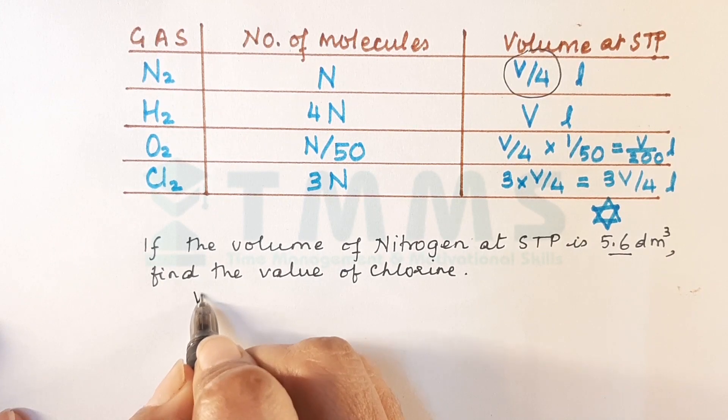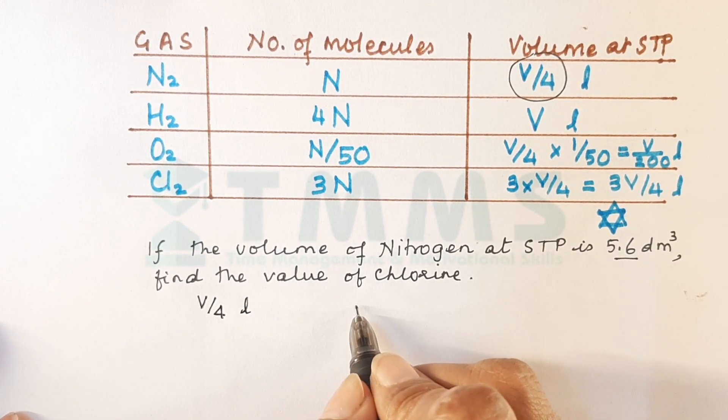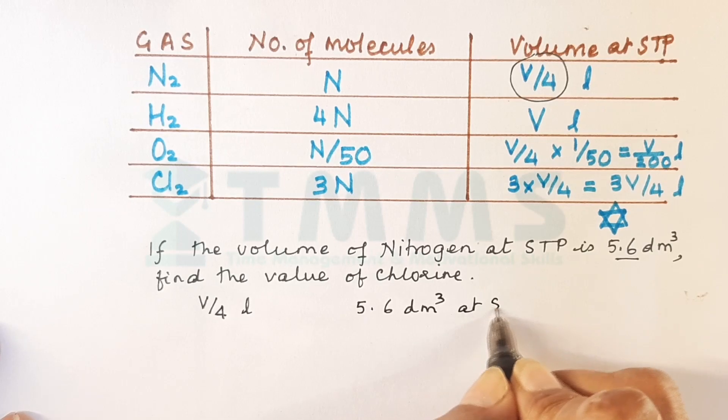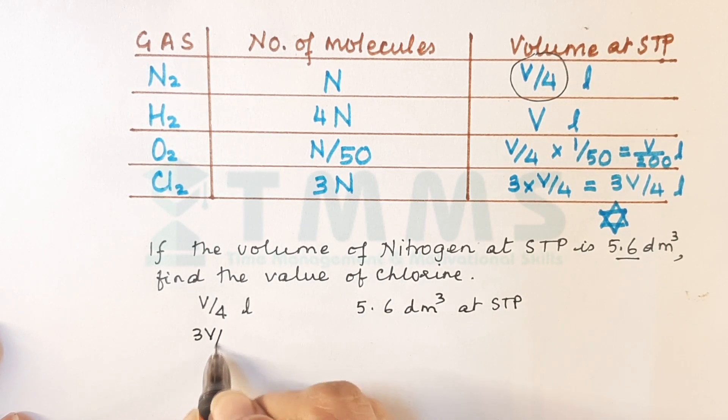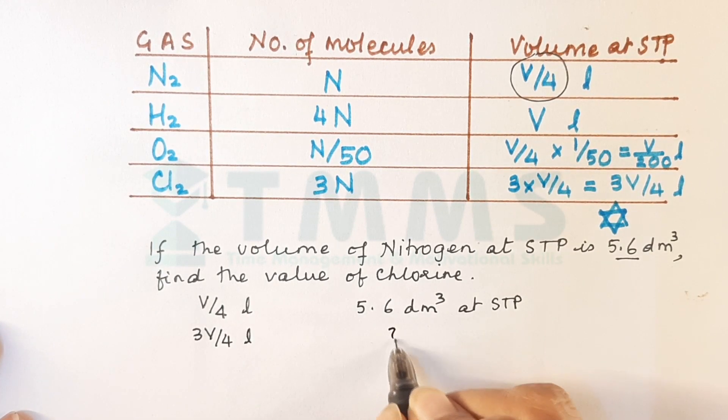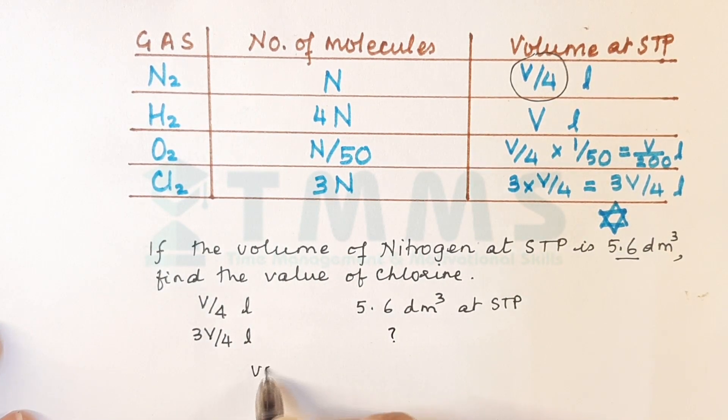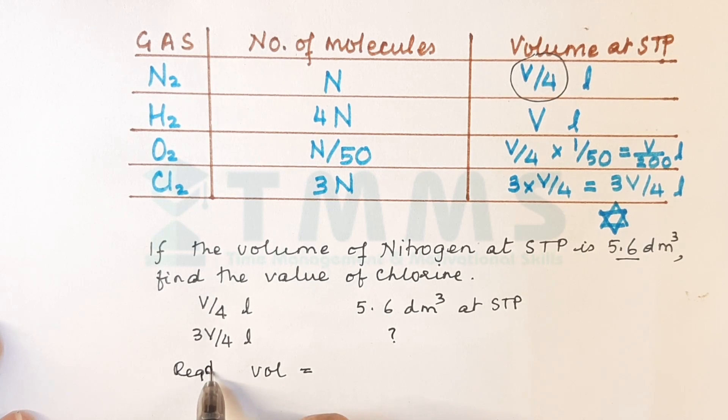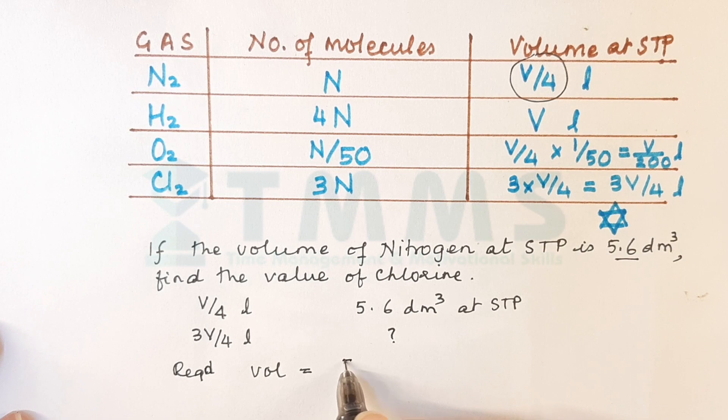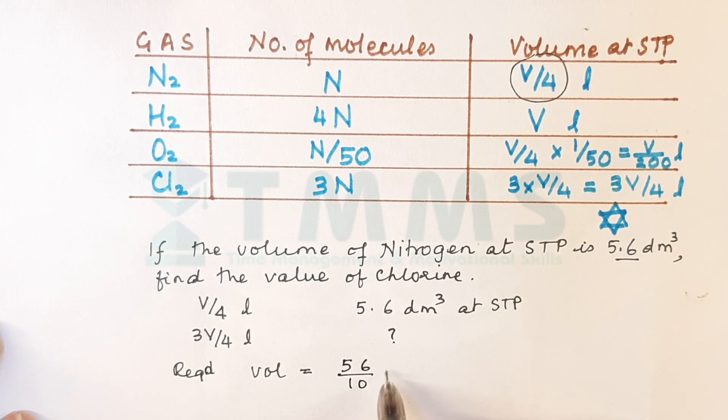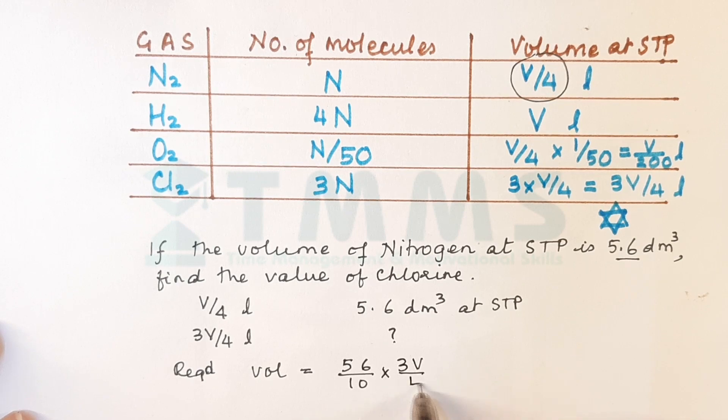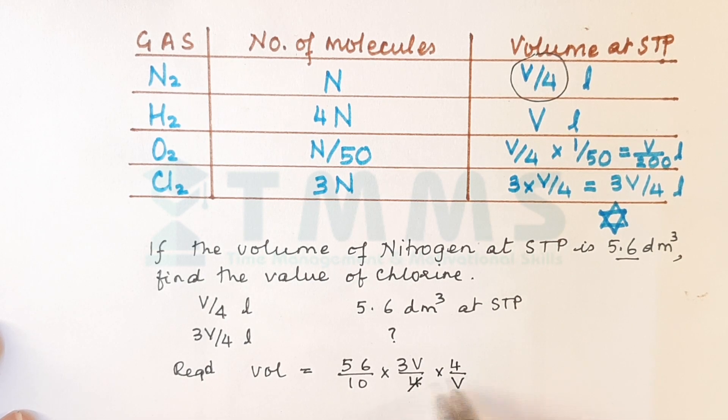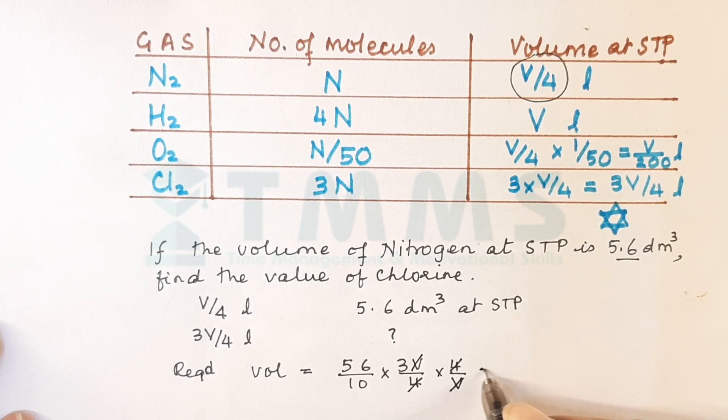For this we use the unitary method. We will say that V upon 4 liters is 5.6 DM cube at STP. And so 3V upon 4 liters will correspond to how much? And then we will say volume is going to be, required volume is equal to numbers across will multiply. So I will write 56 upon 10 multiplied by 3V upon 4, these two, and divide by this. So that will be 4 upon V. Can you see the cancellation?